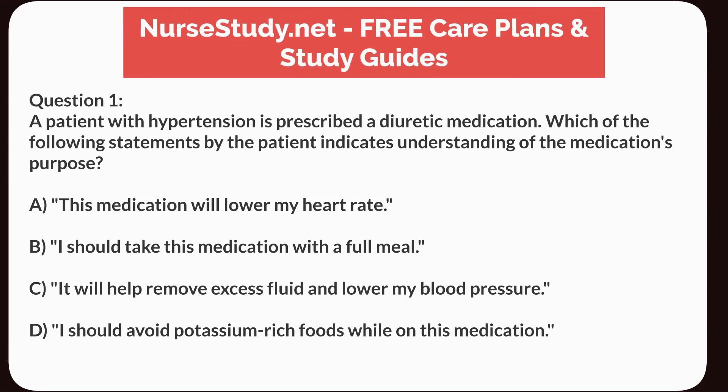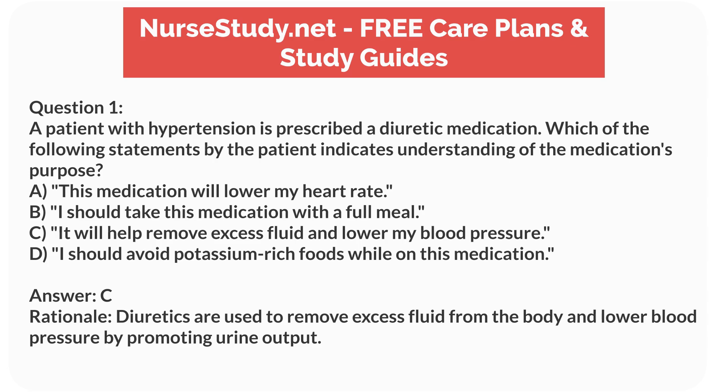Question 1. A patient with hypertension is prescribed a diuretic medication. Which of the following statements by the patient indicates understanding of the medication's purpose? A. This medication will lower my heart rate. B. I should take this medication with a full meal. C. It will help remove excess fluid and lower my blood pressure. D. I should avoid potassium-rich foods while on this medication. Answer: C. Rationale: Diuretics are used to remove excess fluid from the body and lower blood pressure by promoting urine output.